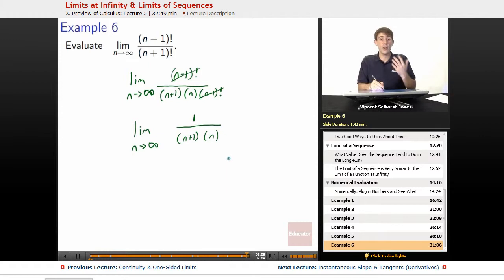As n goes to infinity, our top doesn't change at all - it's just a constant. Since our top isn't ever going to change, but our bottom (n+1) times n gets larger and larger as n goes to infinity, our bottom's growing while our top stays the same. In the long run, the fraction gets crushed down to 0, so the limit of this sequence is 0.